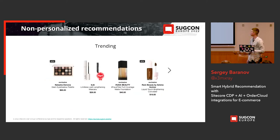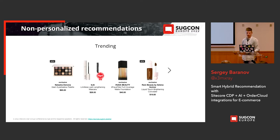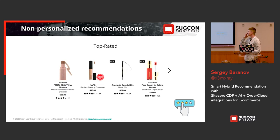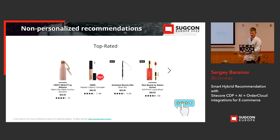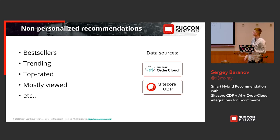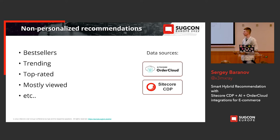The second non-personalized recommendation type is trending. It's very similar to bestsellers, but with one difference — trending recommendations are a combination of recent sales and recent product views. For implementation, you should also take into account product page views. The next type is top-rated products. If you have explicit feedback from your customers, for example rating systems or likes and dislikes, you can easily calculate top-rated items and recommend them. To sum up, non-personalized recommendations include bestsellers, trending, top-rated, mostly viewed, and any other types with static content. Because they are static, you can easily use caching technologies to prevent recalculating the same results for different requests.